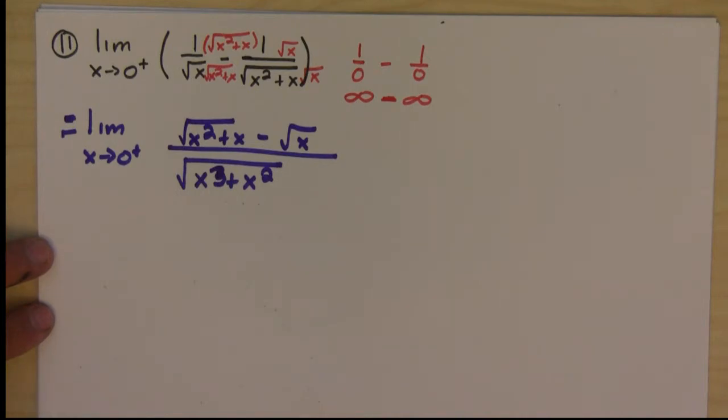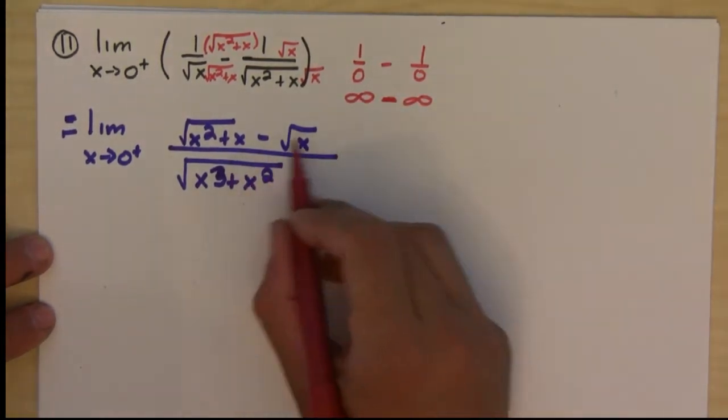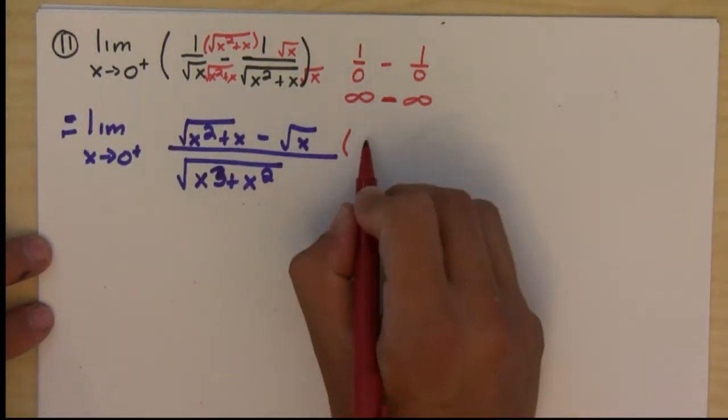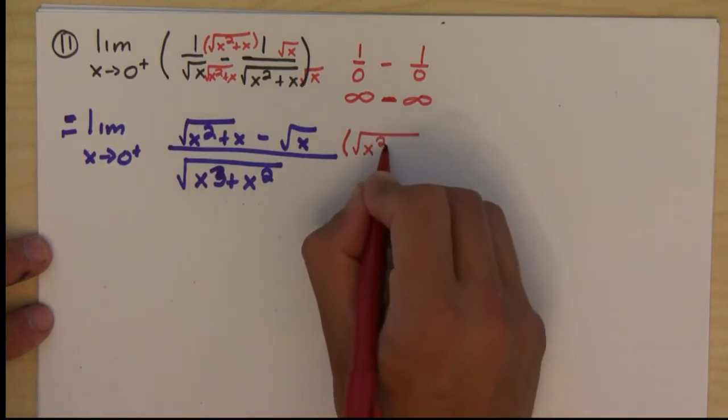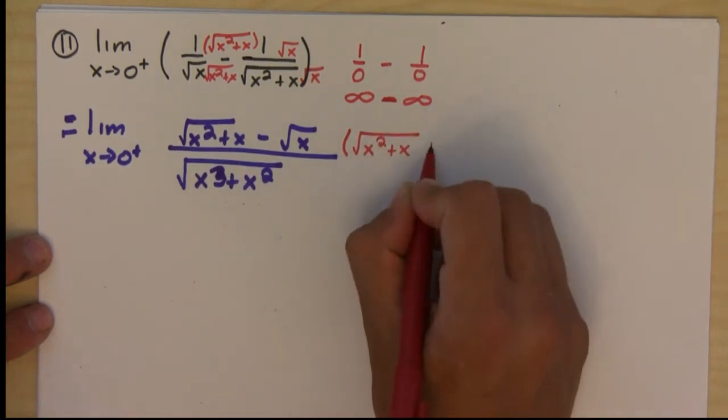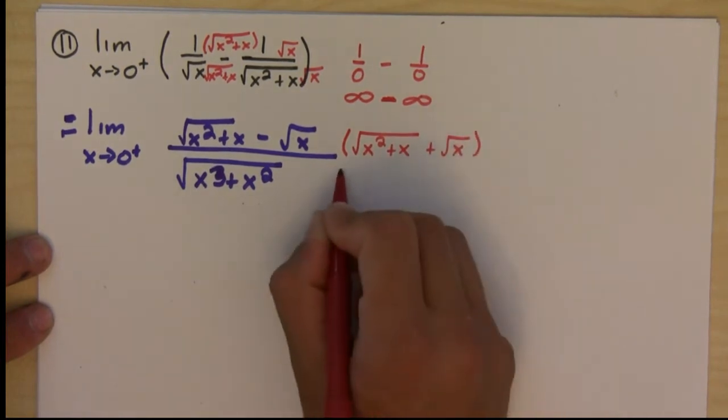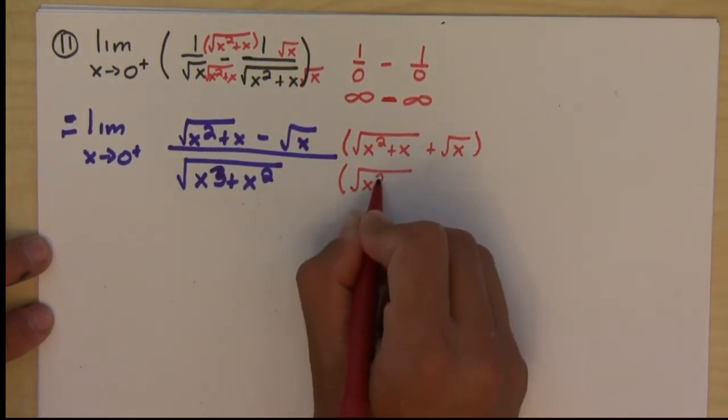So this looks like quite a conundrum. Why don't we try doing our usual trick. Let's multiply by the conjugate. So if we multiply the top and bottom by the conjugate, we would multiply by x square root of x squared plus x plus square root of x, top and bottom.